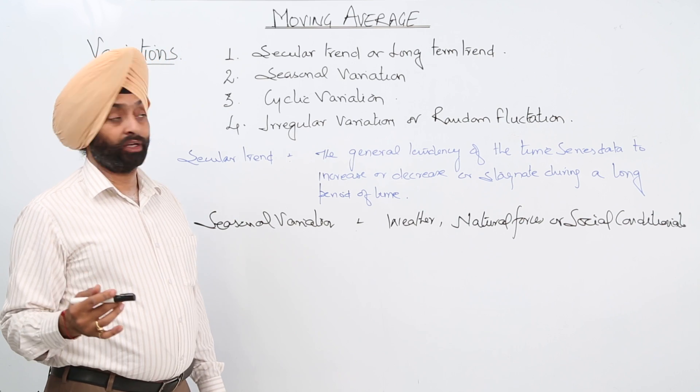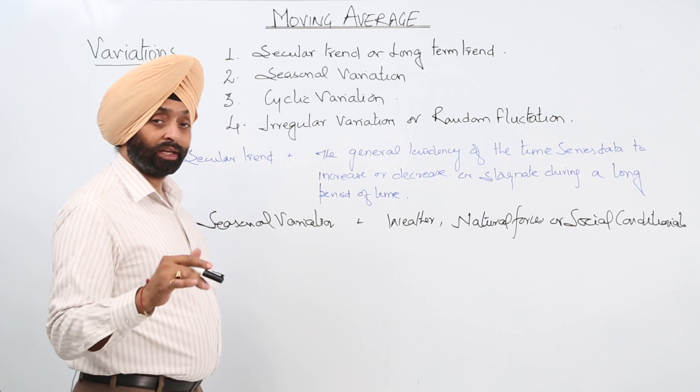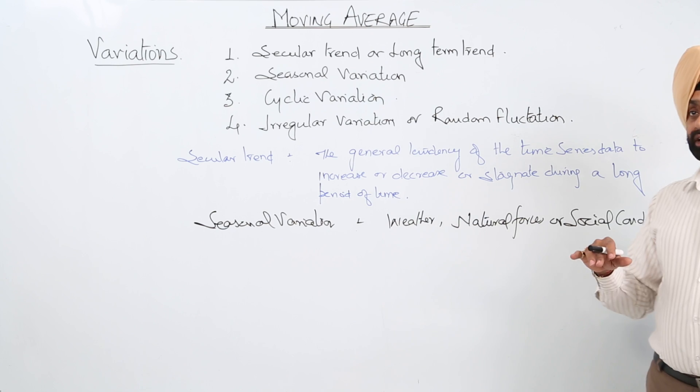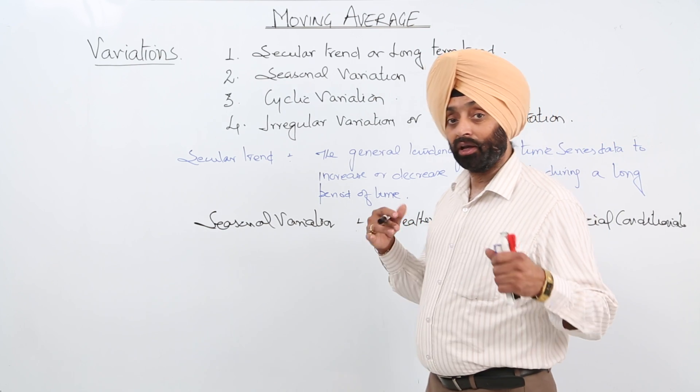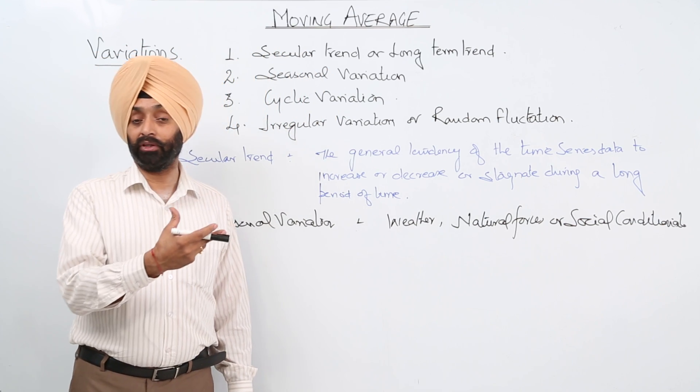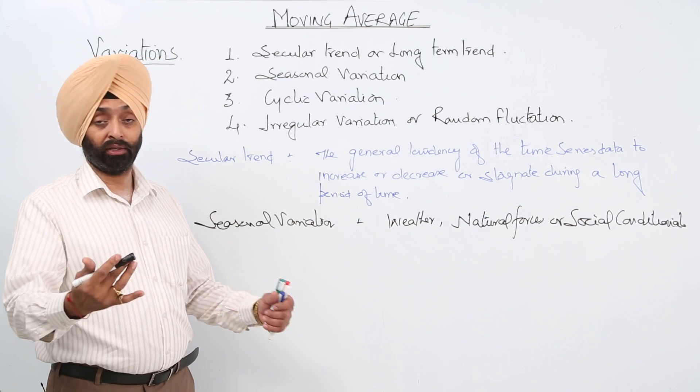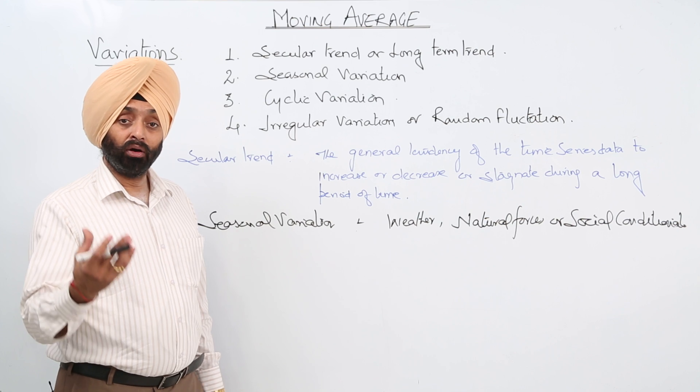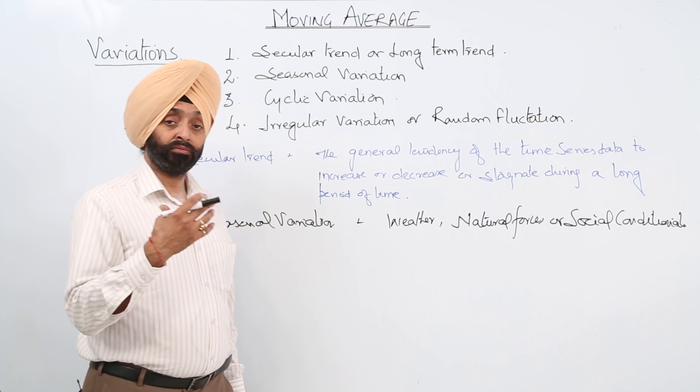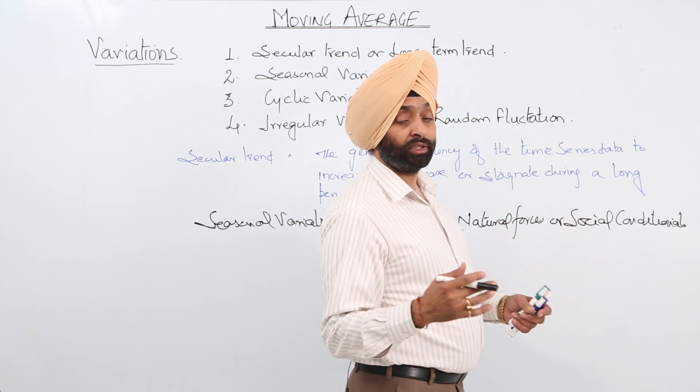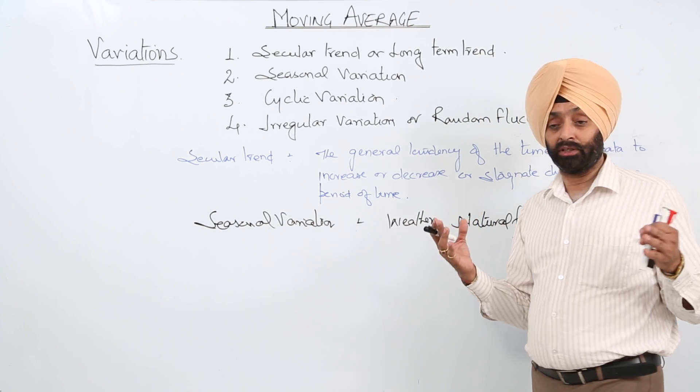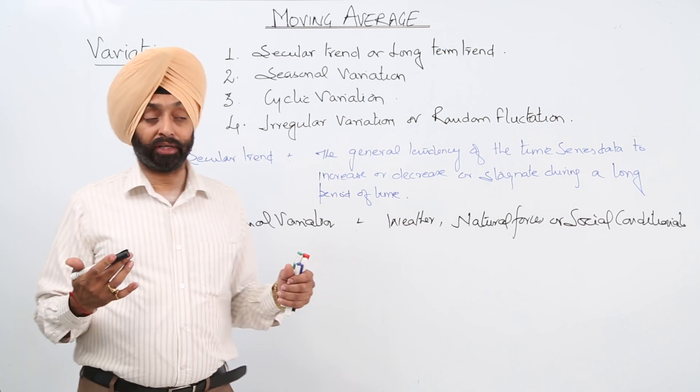Then we are having irregular variation or random fluctuation. In the irregular variation what we can get? Irregular variation means, for example, suddenly the government announced that after six months we are having an election. Then what? For that particular period there will be some irregular variation. That will be on the income of the printing press. So printing press for the election period, for the canvassing there can be lot of things - either it can be a paper printing, it can be a printing on the clothes, different things are there. So that is the sudden rise in the printings.